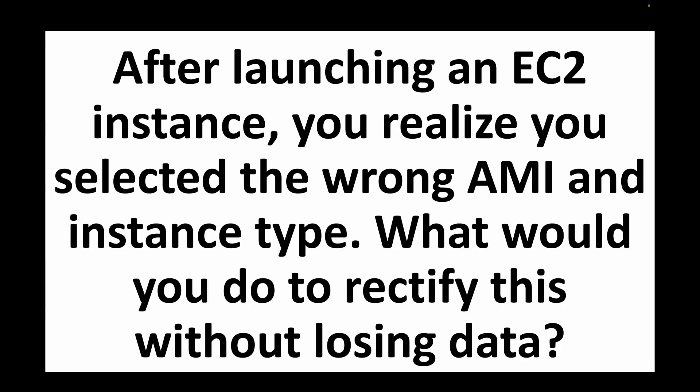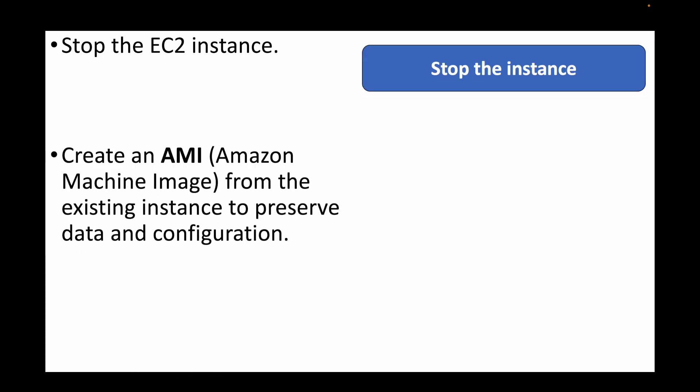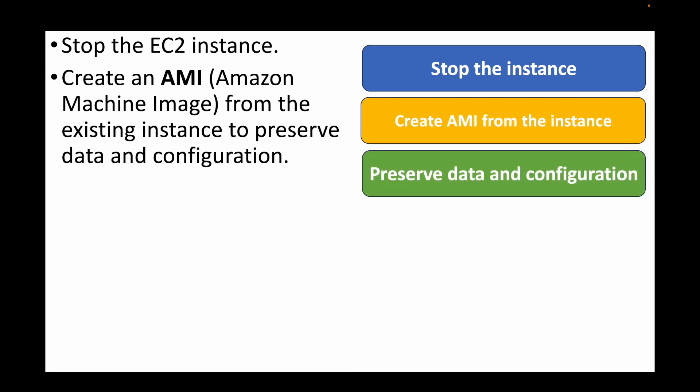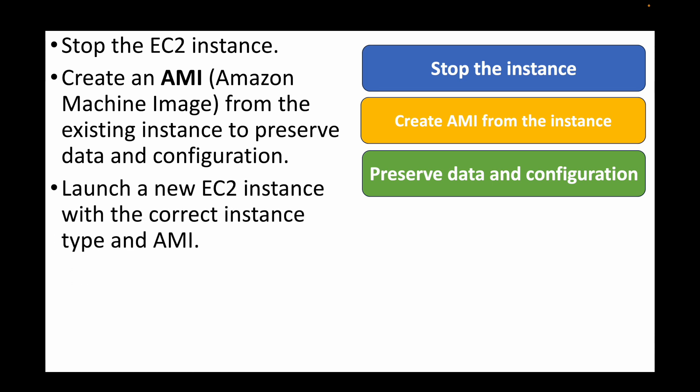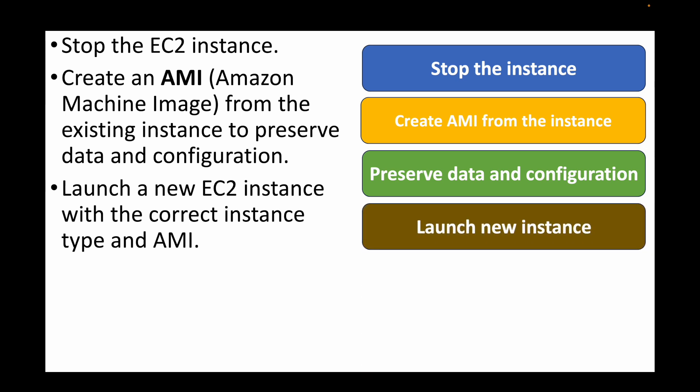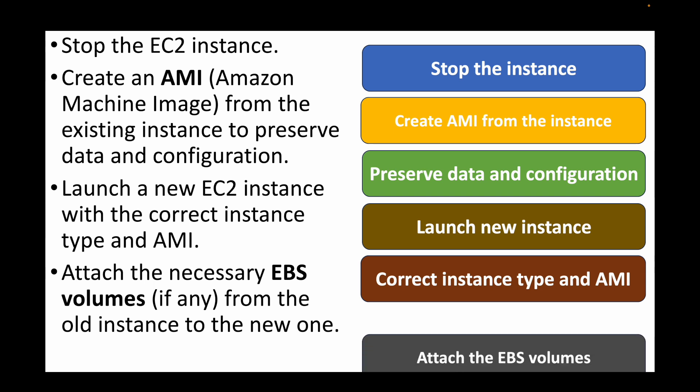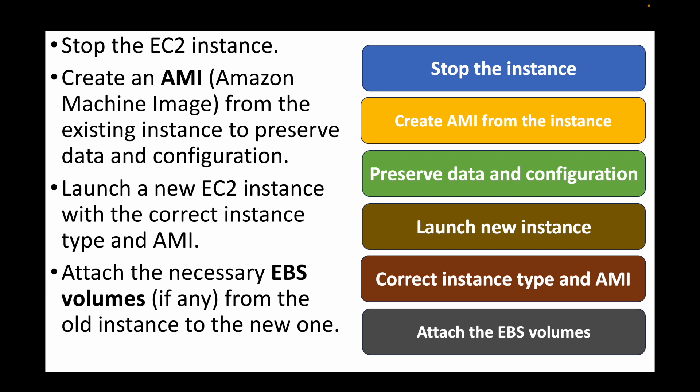The next question: after launching an EC2 instance you realize you selected the wrong AMI and instance type — what would you do to rectify this without losing data? We will need to stop the EC2 instance and then create an AMI from the existing instance to preserve any data or configurations. Then launch a new EC2 instance with the correct instance type using that AMI, and attach the necessary EBS volumes from the old instance to the new one to get the data back. We cannot change the AMI on an existing instance, only the instance type, so we must launch a new instance with the right AMI.